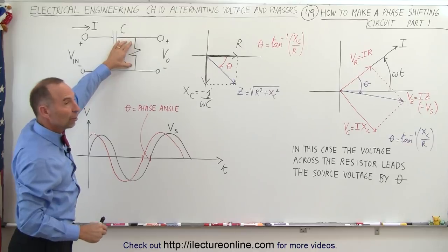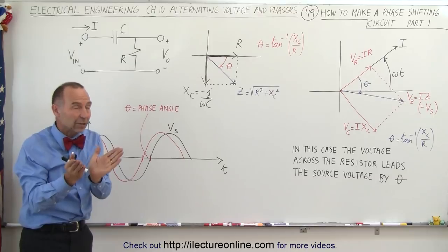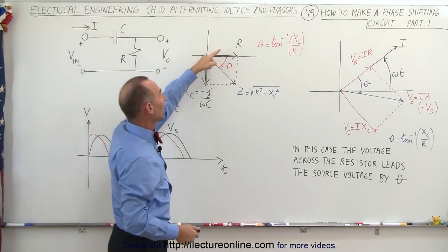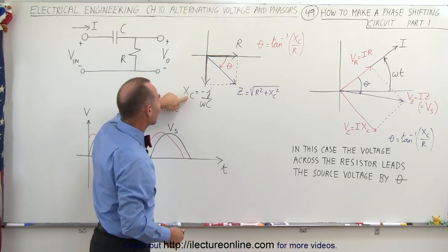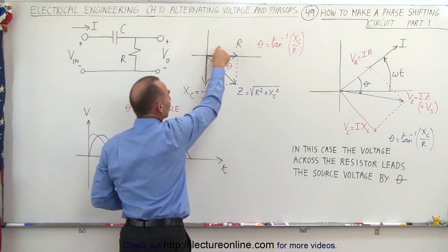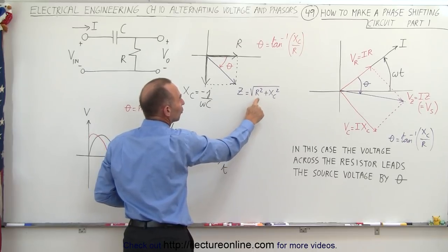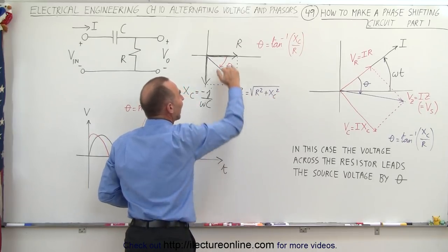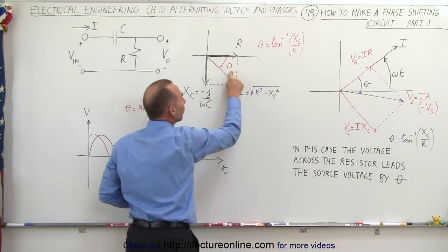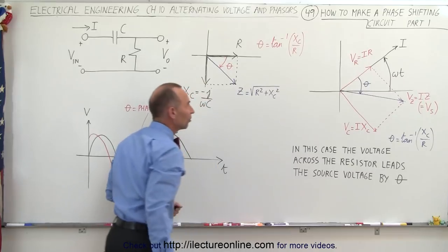The voltage across the resistor will have a different phase than the voltage across the capacitor. As a matter of fact, they are 90 degrees apart from one another, because the resistance has a 90 degree difference with the reactive capacitance. When we have both the resistor and the capacitor in the circuit, together they will have an impedance equal to the square root of R squared plus the capacitor reactance squared. The phase angle theta between the impedance and the resistance is equal to the inverse tangent of the capacitor reactance divided by the resistance.